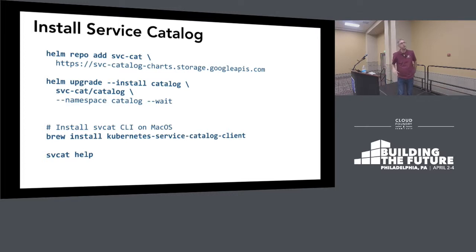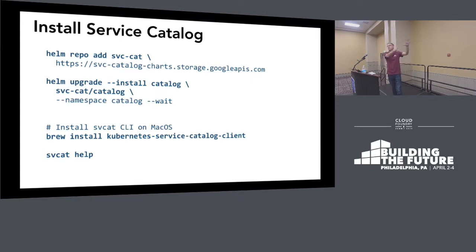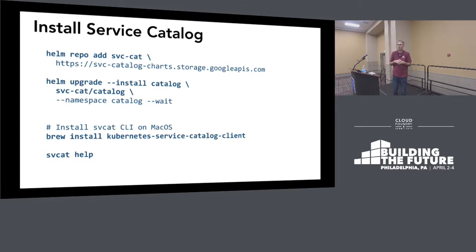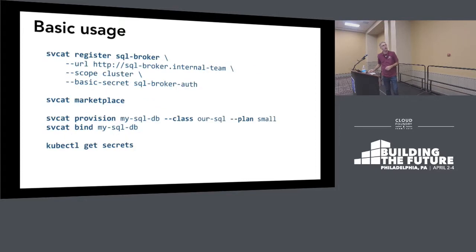I'm not going to install it — this is just for your future reference — but it is essentially installed as a Helm chart. There are different ways to get the CLI, but the CLI is SVCAT. And obviously this assumes you've already got Kubernetes. Everyone assumes you've already got Kubernetes. No one wants to talk about where it comes from. Whereas with Cloud Foundry we talk about BOSH and we're proud of it. Everyone's magically assumed that Kubernetes already exists. So it magically exists, and now we're going to magically install a service catalog onto it and then use it. So obviously I've already registered a broker, and I will show you that broker.